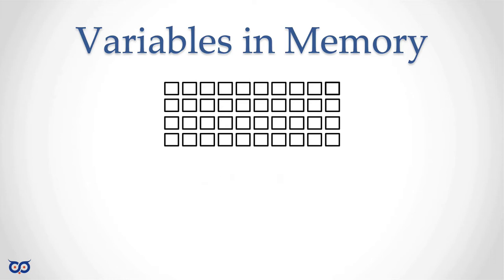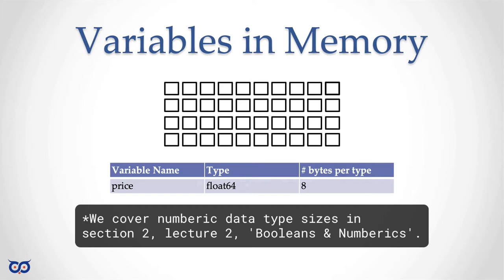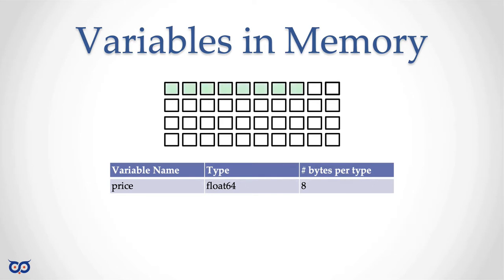So let's say I have a variable called price and the type is float64. We know that float64 requires eight bytes for this type. So my price variable will occupy these eight bytes. I could have placed these eight bytes anywhere in memory, but I choose to place them as the first eight bytes in this memory region. Every time I say I want to use the variable price, I'm always accessing — whether reading or writing — those eight bytes, because those eight bytes are what I need to store a float64 value.